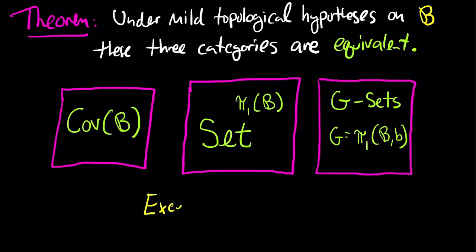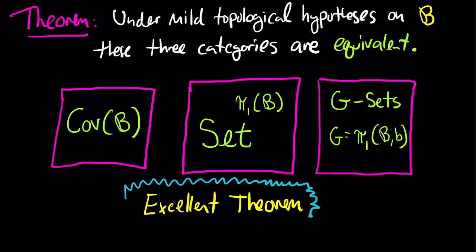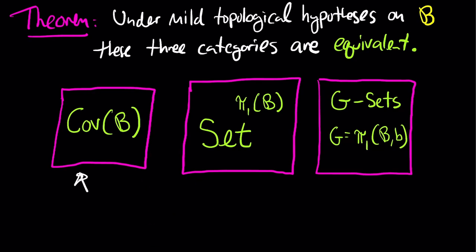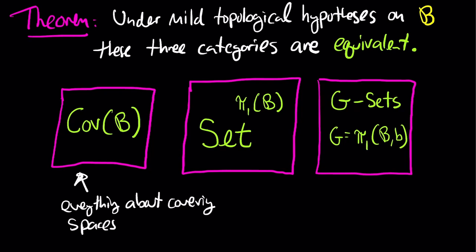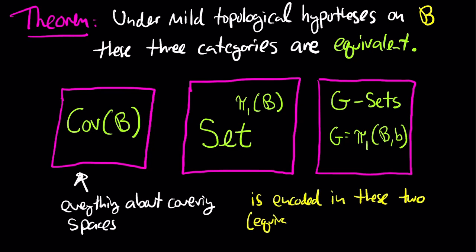This is a really excellent result — algebraic topology par excellence. It says that everything you wanted to know about covering spaces is encoded in one of these two equivalent algebraic categories. Topological categories can be messy and untidy, but algebraic categories tend to be much cleaner and easier to work with.